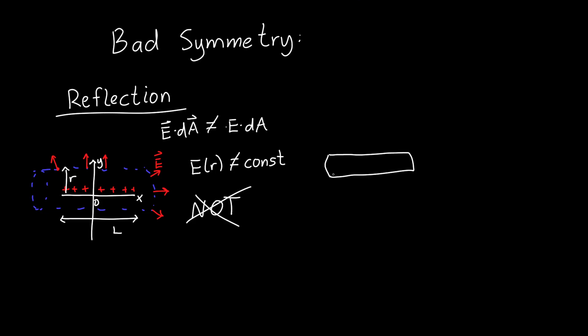A finite cylinder with charge on it also doesn't work. The electric field isn't constant and doesn't point in a consistent direction that lets us cleanly evaluate the dot product.